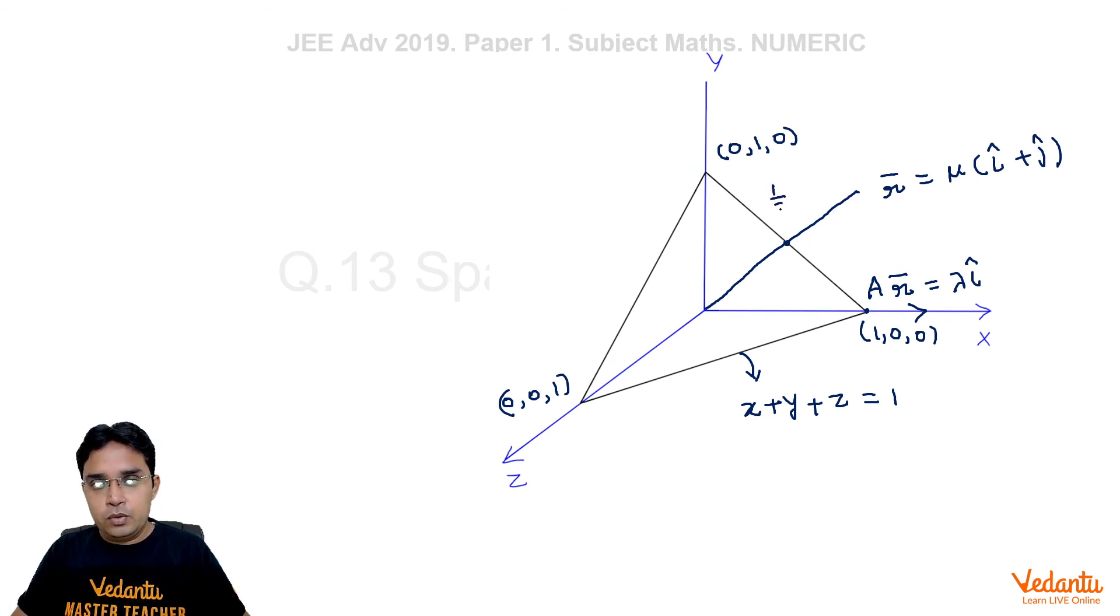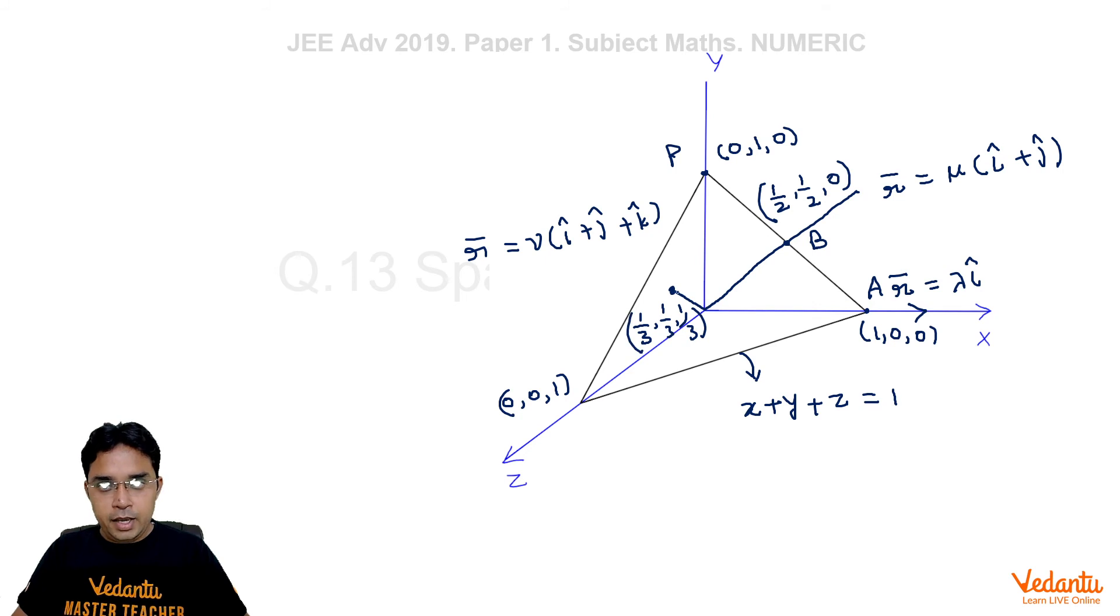So this point would be 1 upon 2 comma half comma 0. This point can also be written as P. In fact this point is B as per given in the question. Now there is one more line which is R equal to mu times i cap plus j cap plus k cap. Because this line is again equally inclined with all the three axes and also our plane is equally inclined with all the three axes, so the point of their intersection should have all three coordinates to be equal and it would be 1 upon 3 comma 1 upon 3 comma 1 upon 3 and this point is C.